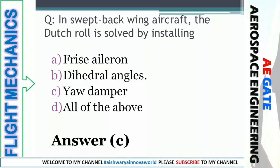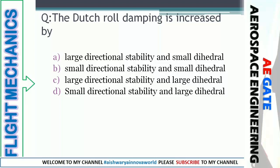Dutch roll damping is increased by: lateral directional stability and small dihedral; larger directional stability and small dihedral; larger directional stability and large dihedral; or small directional stability and large dihedral. To improve roll damping we need high dihedral, so to increase Dutch roll we need small dihedral and larger directional stability.